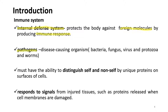A foreign molecule can be a pathogen — a disease-causing organism that can be anything surrounding you, like bacteria, fungus, virus, protozoa, and worms. Your immune system must have the ability to distinguish self and non-self by unique proteins on the surface of the cell. It also must respond to signals from injured tissue, such as proteins released when cell membranes are damaged.